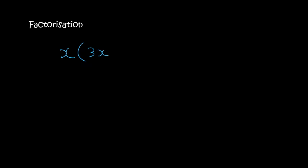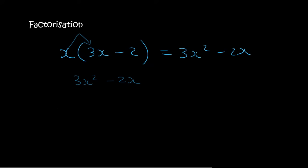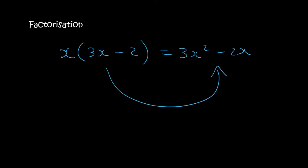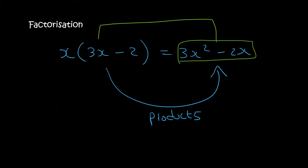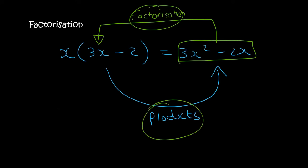We've just come out of the chapter known as products, so by now you are an expert at this. If I gave you a question like x(3x minus 2), you know that you would just multiply the x in, and that would give you 3x squared minus 2x. This process of going from the factored form to the expanded form is just products — you're finding the product. But now, in factorization, we are going to learn how to take this expression and turn it back into that. Factorization and doing the products are opposites of one another.